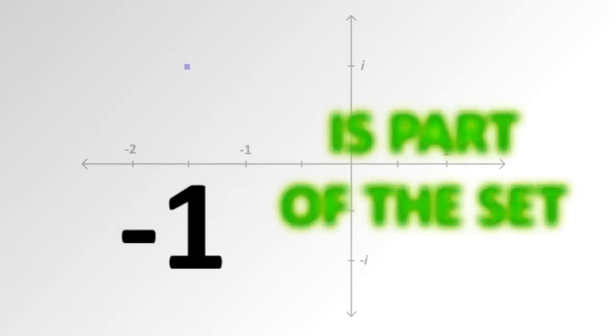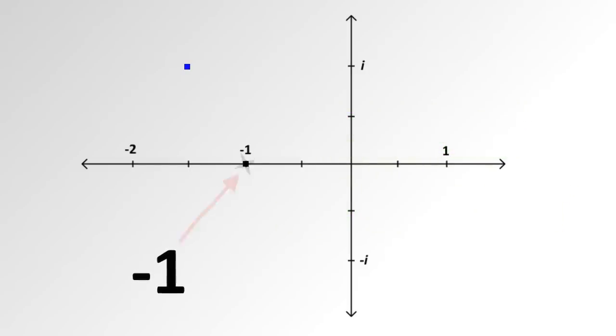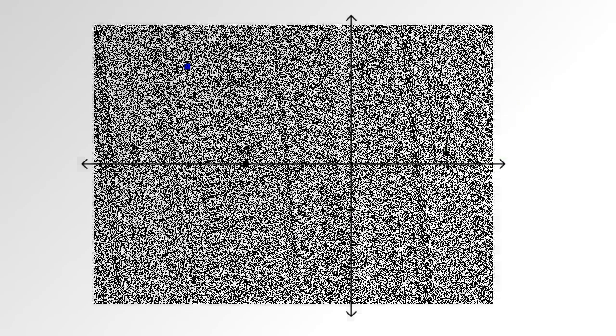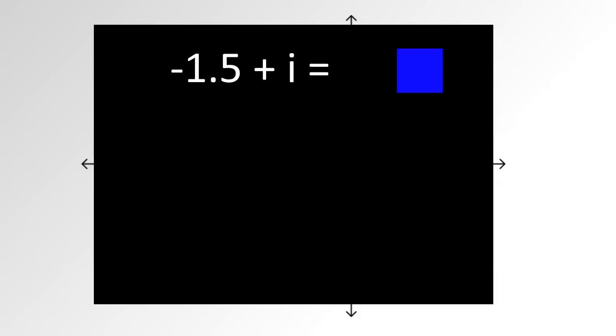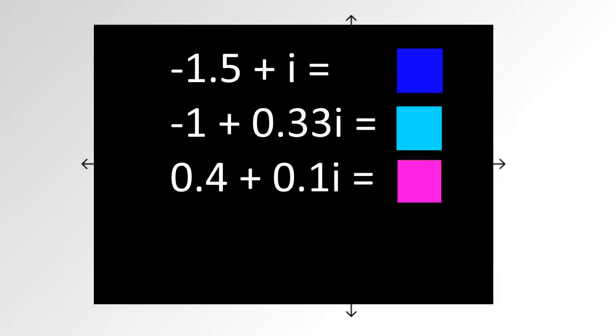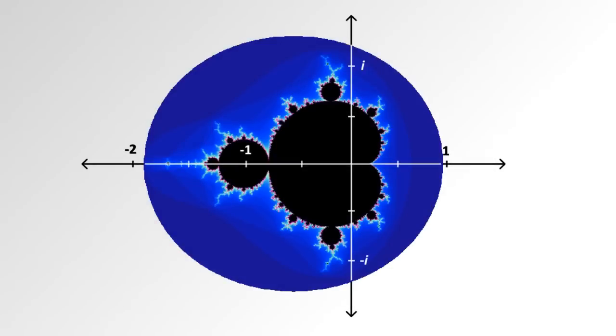That means negative 1 is a part of the Mandelbrot set. We'll color that point black. Now, what if we did this with every point in the complex plane? Color coding each point based on how fast the number grows. If the number goes in a loop, we color it black. Doing that, we get this shape.